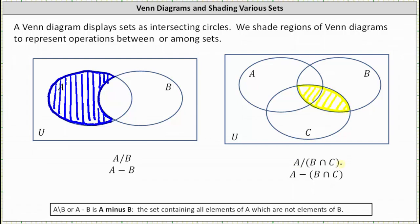So now that we have B intersect C, A minus B intersect C would be the region that is in A which is not in this yellow region, which would be this region here.